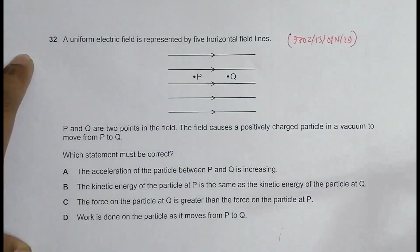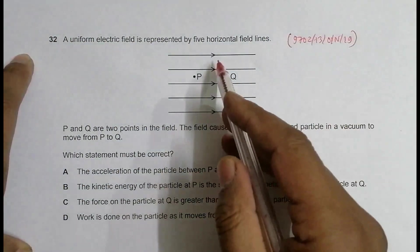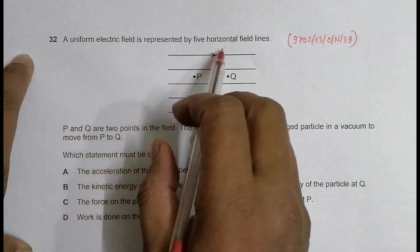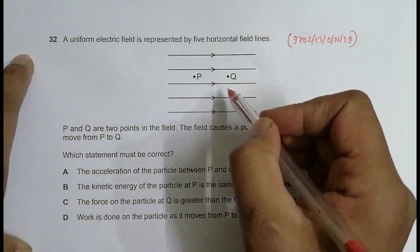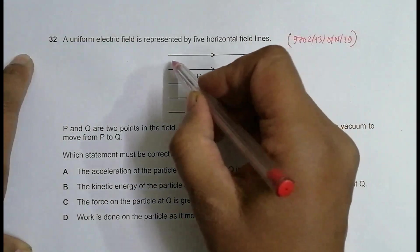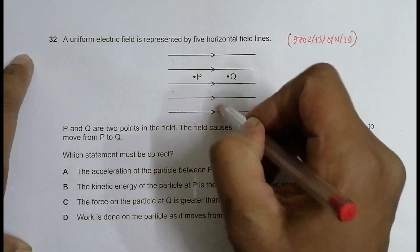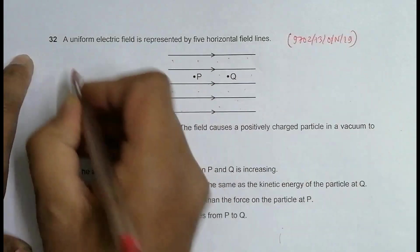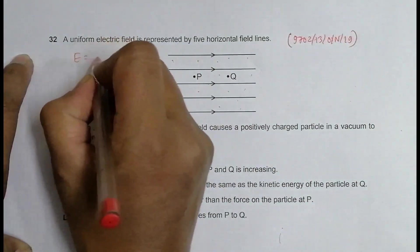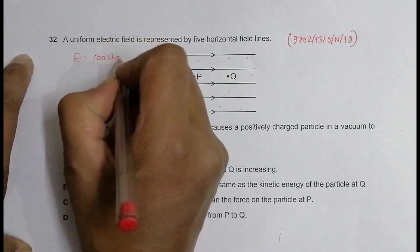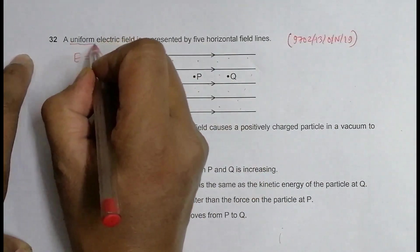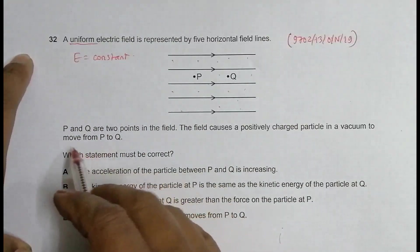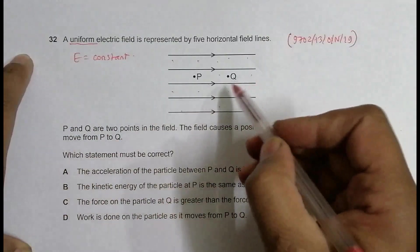This question is concerned with the chapter electric field. You can see lines of force as well. A uniform electric field is represented by five horizontal field lines. So uniform means that the field here, here, everywhere the value of E is constant. It is said by the language also, it is said by the pattern of the field lines as well, they are parallel.